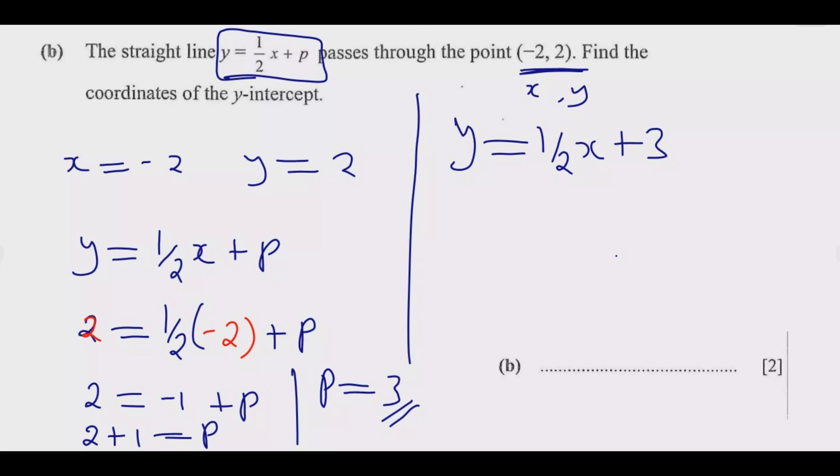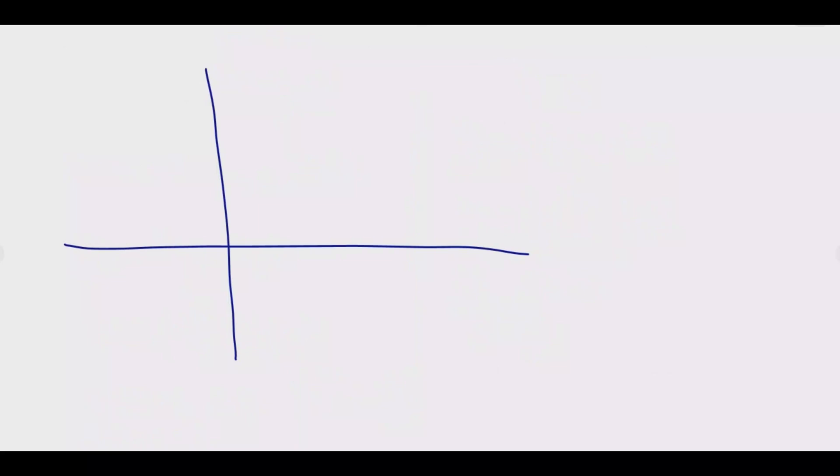When x = 0, what would be the value of y? So y = 0 + 3, so y = 3. So this coordinate, the coordinate of y-intercept, remember there is only one y-intercept for this equation.